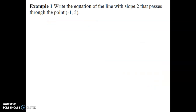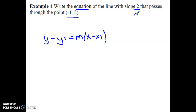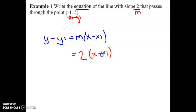On your handout, we're going to look at writing equations. Try this one: write the equation of the line with slope 2 that passes through the point (−1, 5). We have a slope and a point, so we plug into slope-point form. m is 2, x₁ is negative 1, y₁ is 5. Substituting gives x minus (−1), which becomes x plus 1. So the equation is y minus 5 equals 2 times (x plus 1).